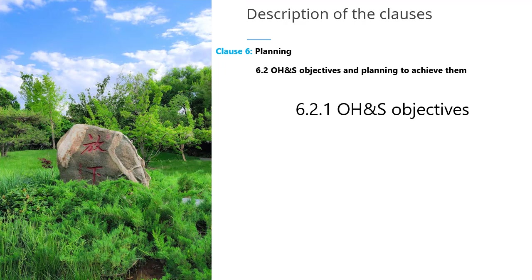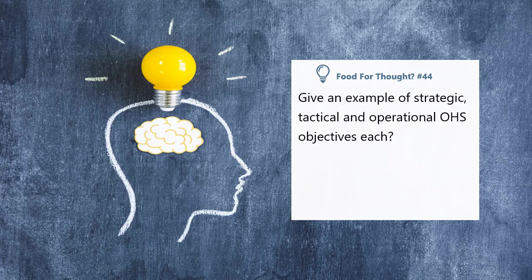Clause 6.2.1 specifies the features of OHS objectives. The requirement of this clause is that OHS objectives should be consistent with OHS policy requirements and must be measurable either quantitatively or qualitatively. The OHS objectives can be set at strategic, tactical, and operational levels. Give an example of strategic, tactical, and operational OHS objectives each. Pause this slide and think of the answer before I explain.